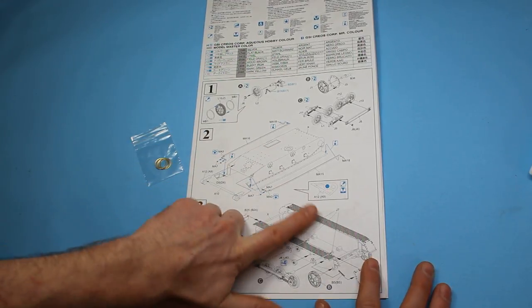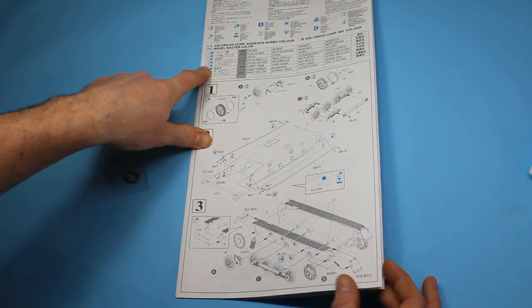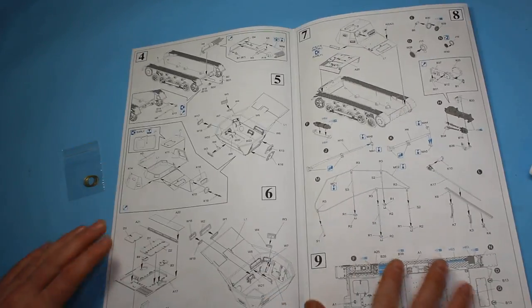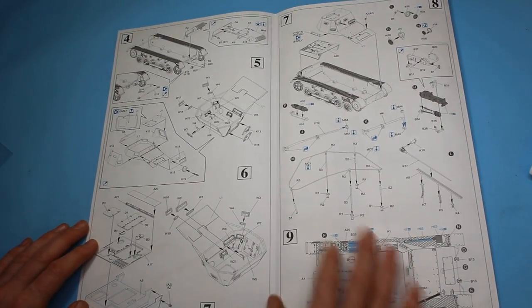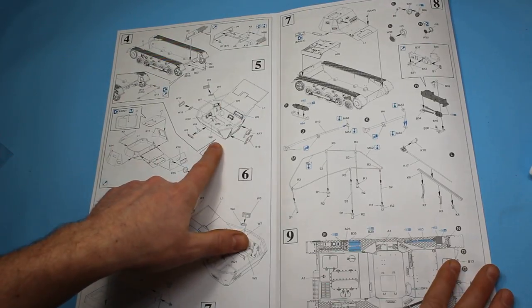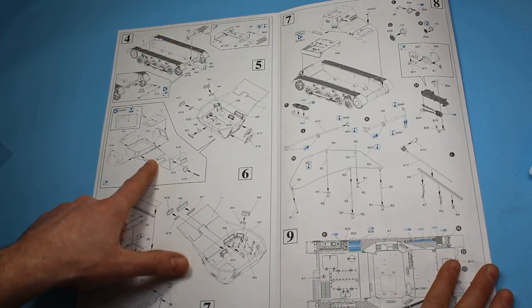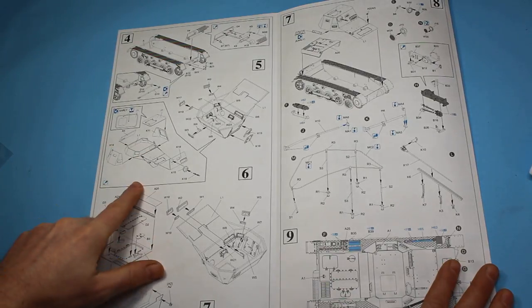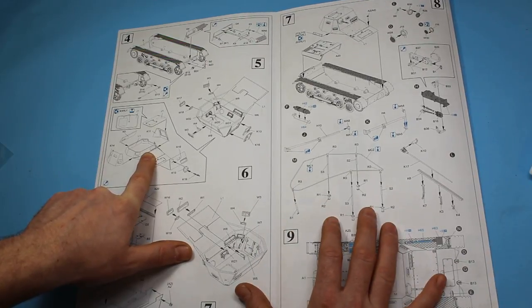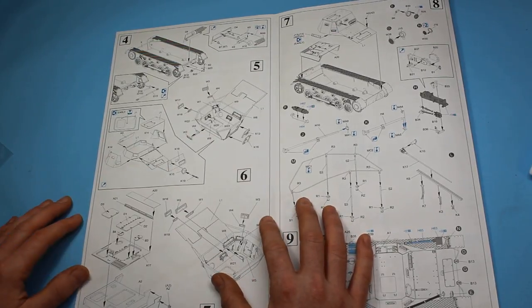All the way throughout here we've got paint call-outs where needed and that is Gunze colours, Mr. Hobby or Mr. Colour call-outs. Once we're into step four through to nine here, it shows completing the lower hull and starting on the superstructure above. This is a framework here with armour parts added to it to create that which gives it probably a scale thickness I'm imagining, but it's a better way to get the molding process as well as opposed to doing it all in one go.